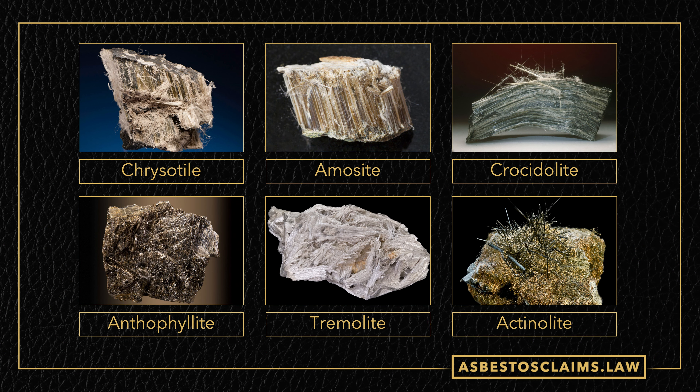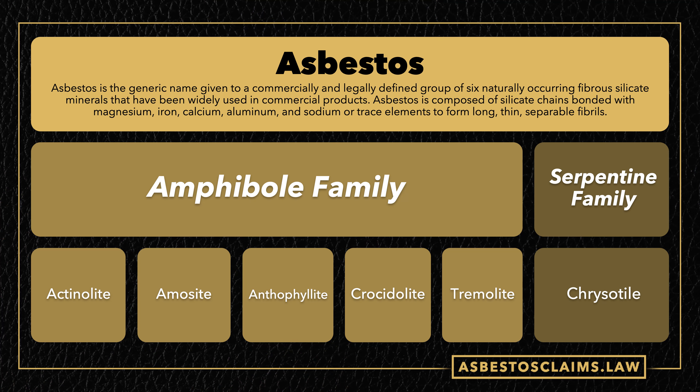So what made asbestos so versatile that it was needed in a locomotive and literally in a rocket ship? First, let's get a good idea of what asbestos is. Asbestos is a term used by industry to describe six different minerals that all have properties which make them useful to industry. These six minerals are related, but they're classified under two different families. We have the amphibole family, which includes actinolite, amosite, anthophyllite, crocidolite, and tremolite. And then we have the serpentine family, which includes chrysotile.